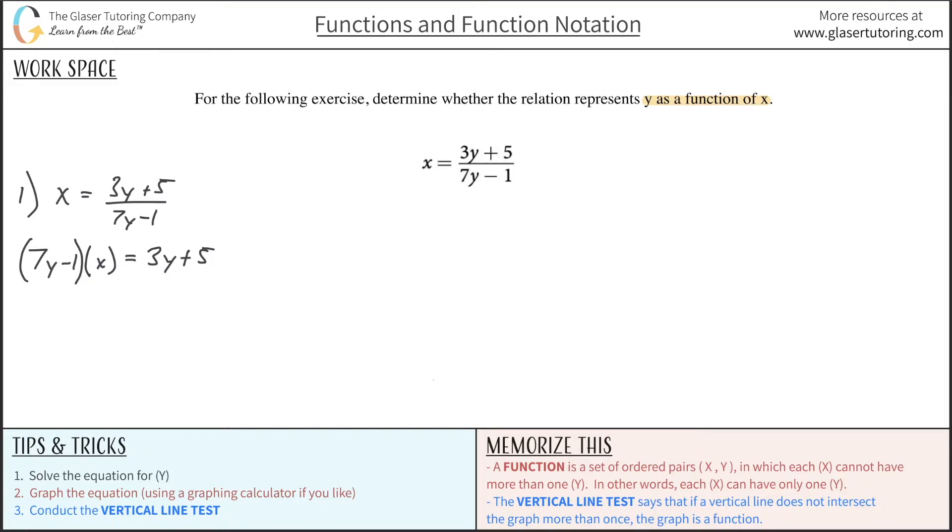So I'm going to distribute the x. So this becomes 7yx, it doesn't matter, you can call it xy, minus x will then be equal to 3y plus 5.